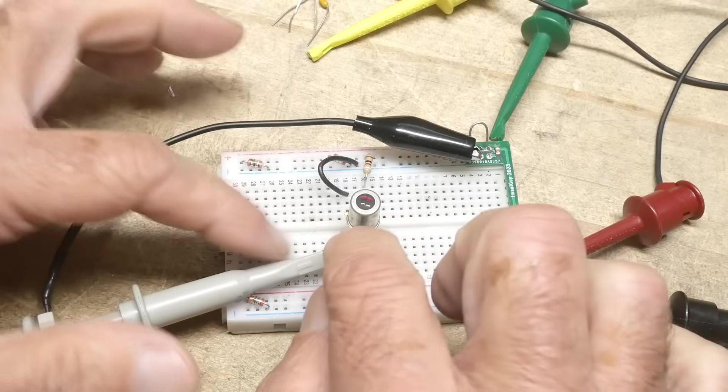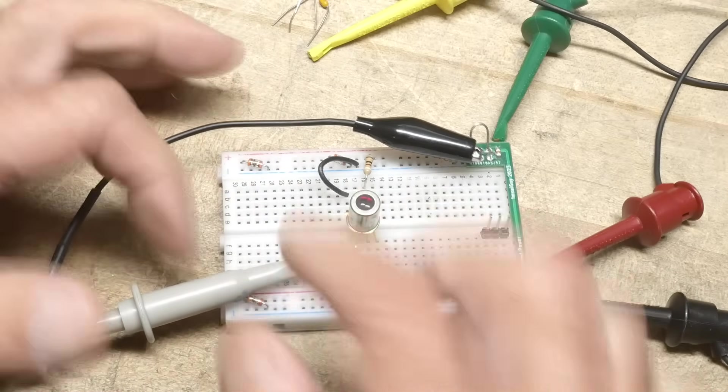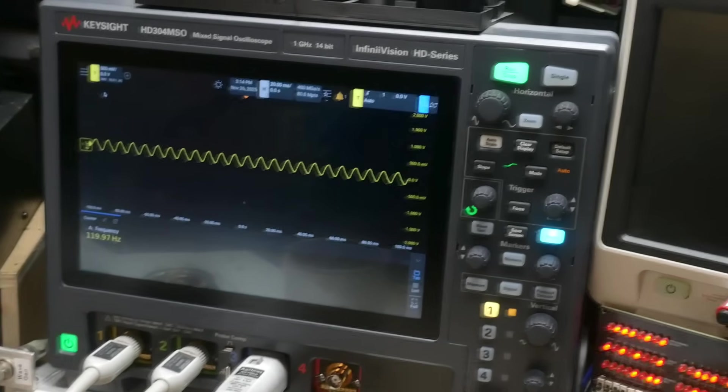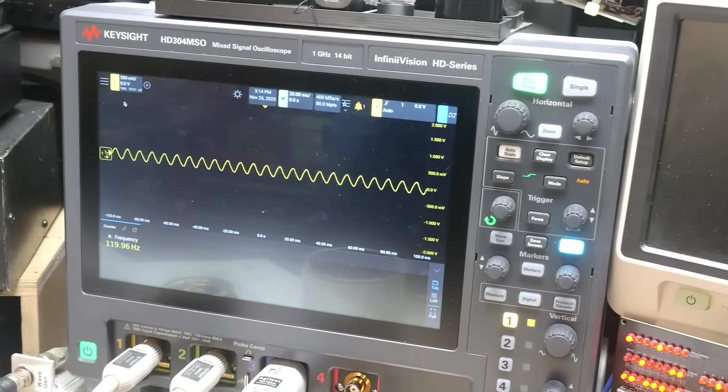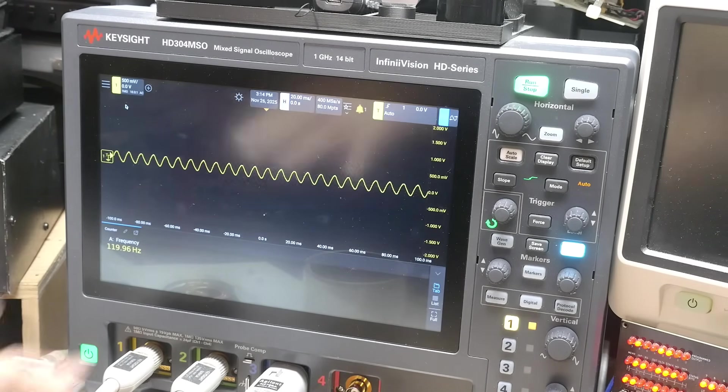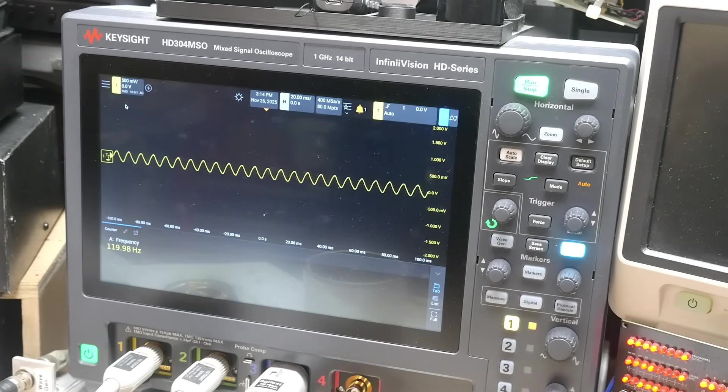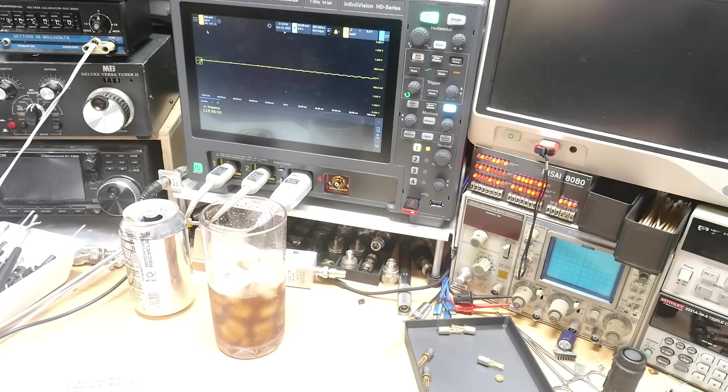So what we're going to do is we're going to look at the collector of the transistor on the oscilloscope. I have it AC coupled right now, and what we're seeing is a wiggly up and down. Why is that? So if I put my hand over the circuit, you can see that it disappears.